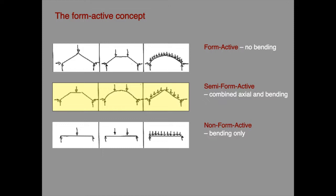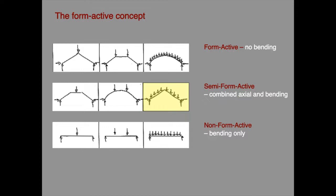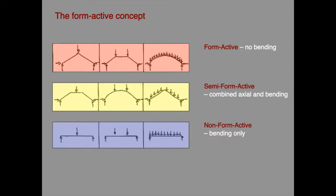In the case of architectural structures, the principal load condition is normally a distributed load across a horizontal span. The form active shape for this is a curvilinear arched form. Note that the shape which is form active for the distributed load becomes semi-form active if the load changes. And the shape which is semi-form active in the context of the distributed load is actually the form active shape for a point load at mid span. There is no such thing as a form active shape as such — a shape is only form active in the context of a particular load.